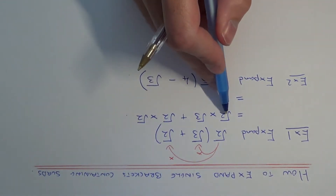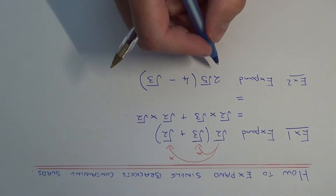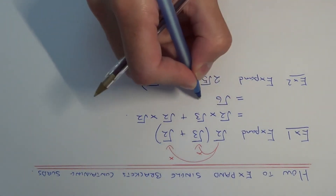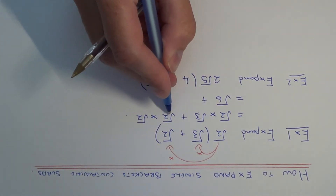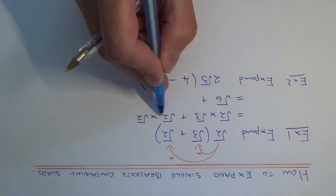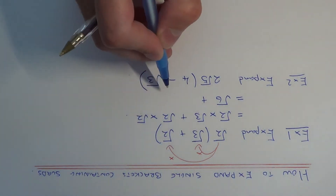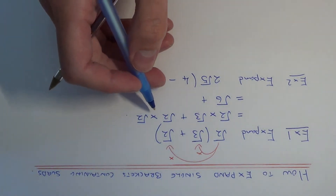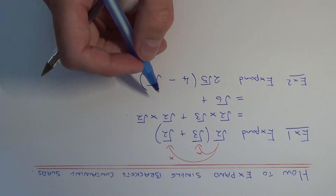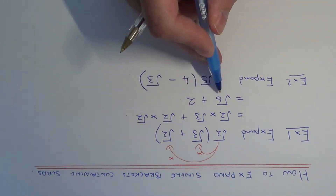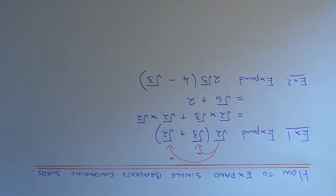So if we multiply √2 by √3, this will give us √6. And for our second term, this time they're both the same. So √2 times √2 will give us √4, and the square root of 4 is 2. So we get the answer √6 + 2, and this cannot be simplified anymore.